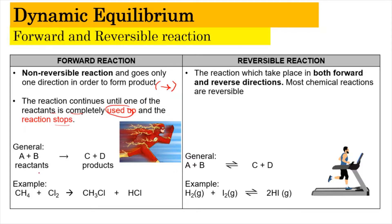You can imagine that one of the reactants is the excess reactant and one is the limiting reactant. When one of the reactants is completely used up, the reaction stops because no more product can be formed. When the reaction moves in only one direction, it is known as the forward reaction — in one direction only.